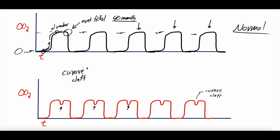The Curare Cleft occurs in a patient on mechanical ventilation — on a ventilator — who might be sedated or even paralyzed, depending on what's going on. The ventilator is delivering each one of these breaths repeatedly. But this divot represents the patient trying to take a breath in beyond what the ventilator is giving them. This is carbon dioxide during exhalation — air is leaving the patient's lungs.